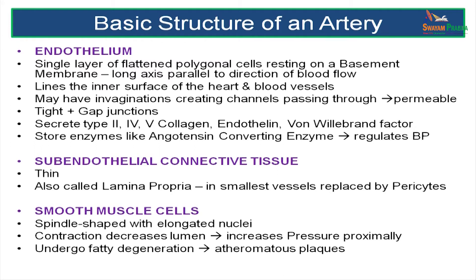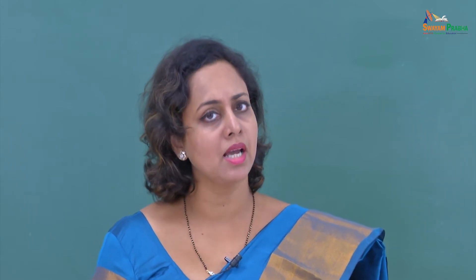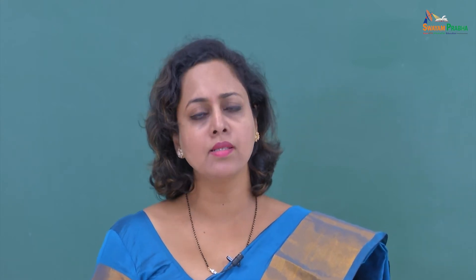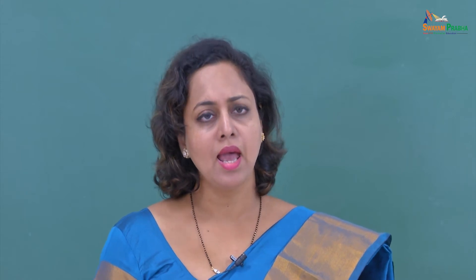The subendothelial connective tissue is thin and is also called the lamina propria. In the smallest vessels it is replaced by cells called pericytes. The smooth muscle cells are fusiform and run concentrically across the length of the blood vessel. Their contraction decreases the luminal diameter, narrows the lumen and increases pressure proximally. These smooth muscle cells are the ones that undergo fatty degeneration and can change into forming an atheromatous plaque.